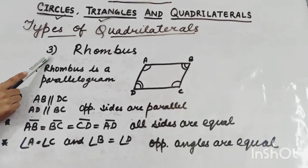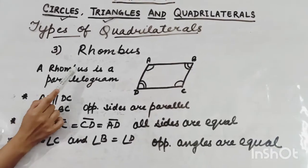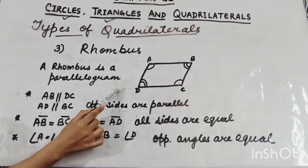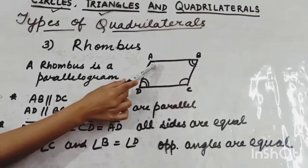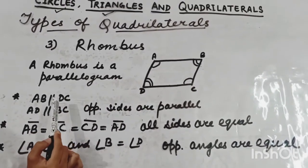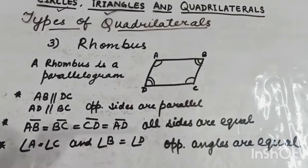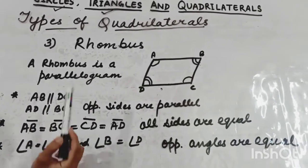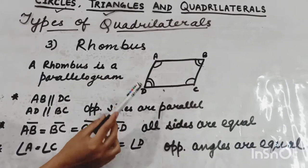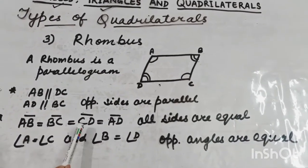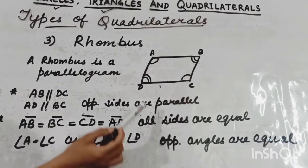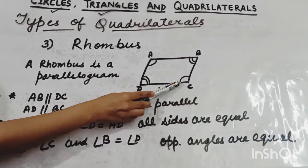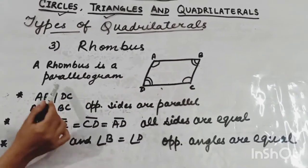Our third type of quadrilateral is the rhombus. Rhombus is also a parallelogram. In a rhombus, opposite sides are parallel: AB is parallel to DC, and AD is parallel to BC. But additionally, a rhombus has all four sides equal — AB equals BC equals CD equals DA. Also, opposite angles are equal: angle A equals angle C, and angle B equals angle D.